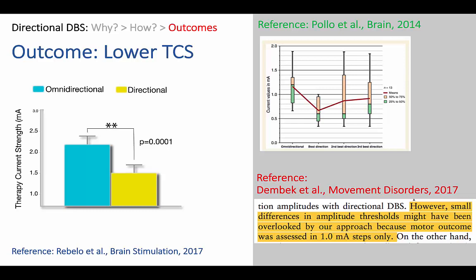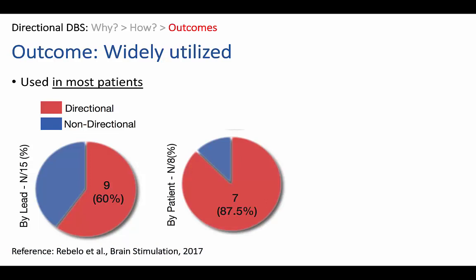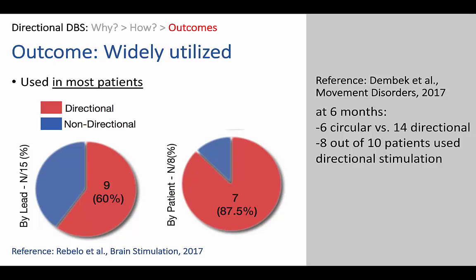The answer may be in step size — rule one of directional programming. If you use a large step size such as one milliamp, you're unlikely to obtain this reduction in therapy current strength. The third outcome is that directional programming features are widely utilized. When we analyzed by lead, we had 15 leads studied in eight patients, and nine of those leads were programmed directionally. By patient, that means seven out of eight patients used directional stimulation features on at least one side — this was surprising to us. More recently, Dembeck has also reported similar findings at six months: 14 out of 20 leads were programmed directionally, meaning eight out of 10 patients used directional stimulation features on at least one side.